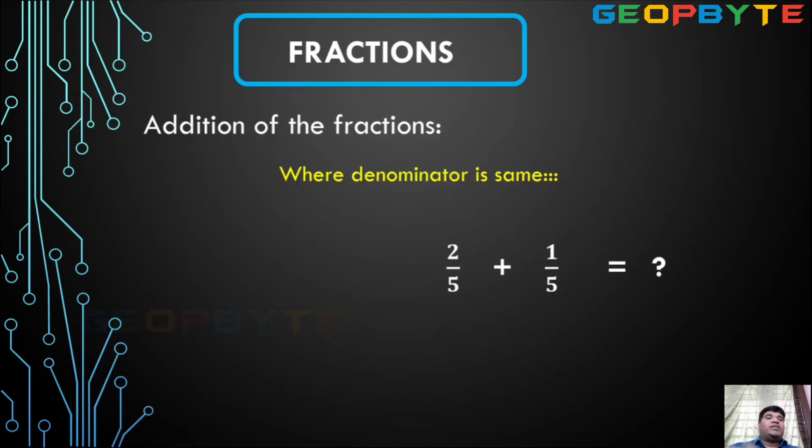Addition of the fractions. Suppose if you want to add fractions, we have two conditions. First of all, where denominator is same. Second one, denominators are different. First easy question, where denominator is same. Then directly you can add the numerators. Denominator is the same. Look at the question. 5, 5 denominator. So directly 5. 2 plus 1, answer. 3 by 5 is the answer.